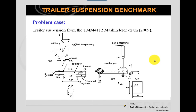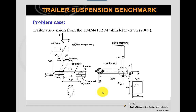Here is the sketch from the machine element exam showing the trailer suspension system: the torsional beam, the quite rigid arm, and the wheel hub. You can see the main dimensions here, and I will show you how this is modeled in FEDEM.